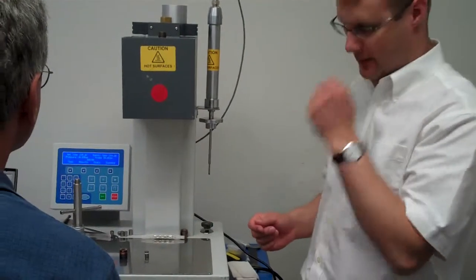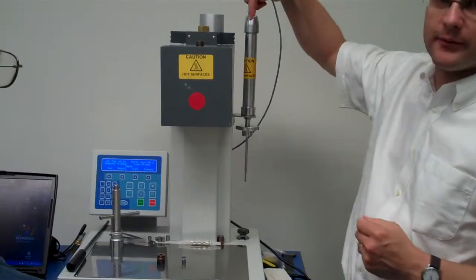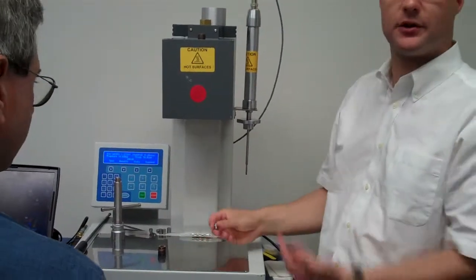The key question is how do we fit the die? With the MFI we drop it from the top, with this machine we drop it up from the bottom.